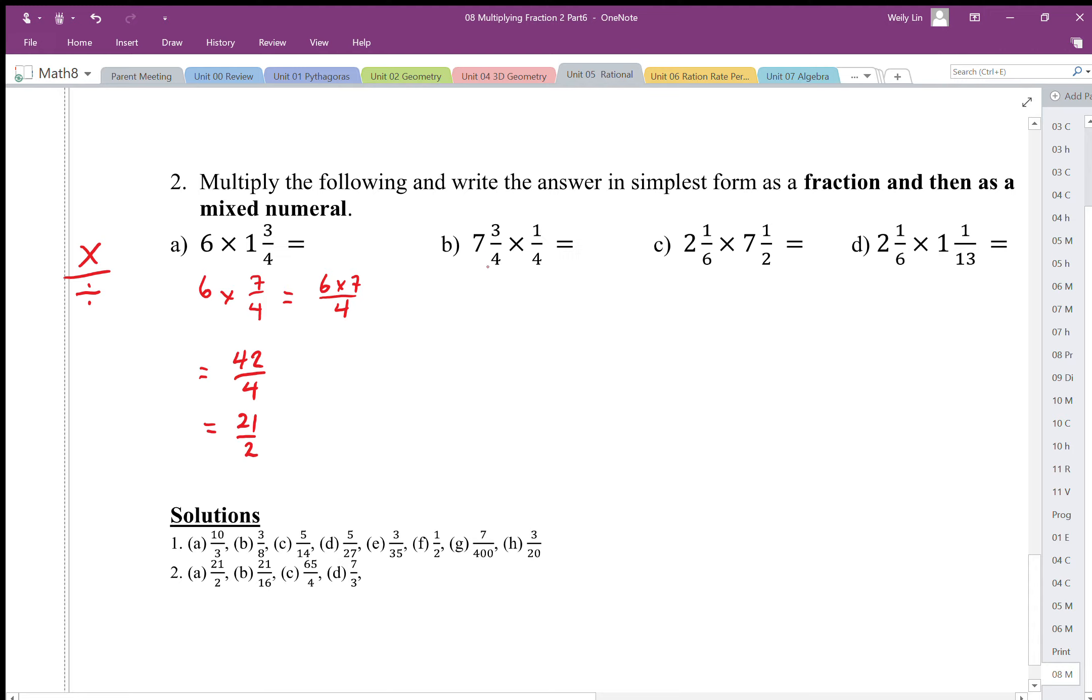Converting this into an improper fraction, we get 7 becomes 28 over 4, so 28 plus 3 is 31 over 4 times 1 over 4.